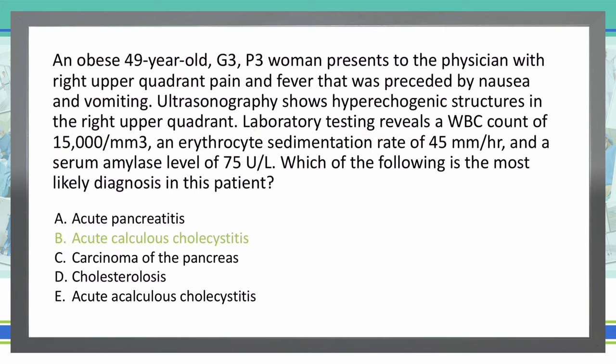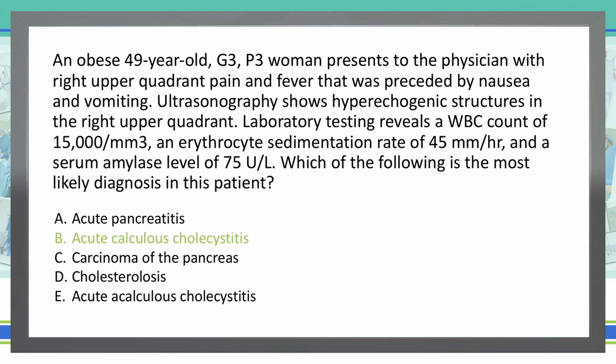Therefore, the correct answer is acute calculous cholecystitis. This right upper quadrant pain in an obese middle-aged multiparous female, with ultrasound findings consistent with gallstones and nausea and vomiting likely after a high-fat meal, is all indicative of acute calculous cholecystitis. The gallstones are getting stuck in the gallbladder neck or cystic duct, causing pain, and sometimes referred pain up to the shoulder.